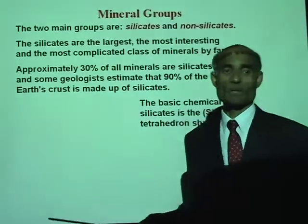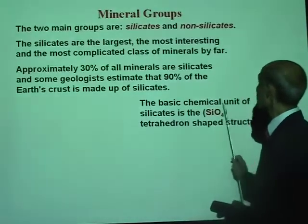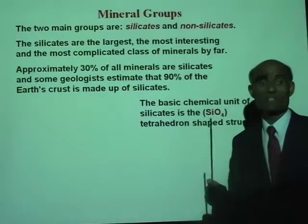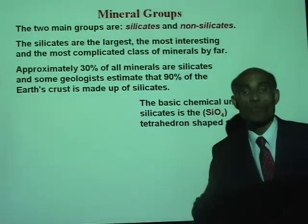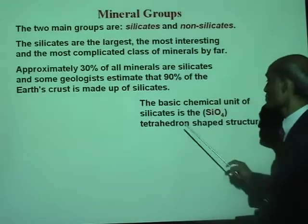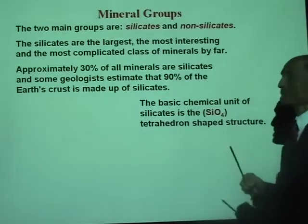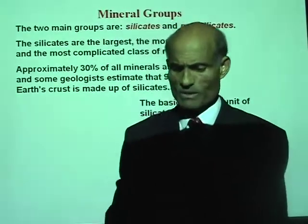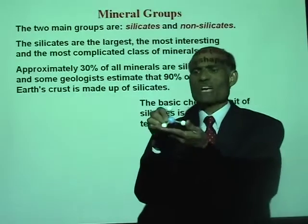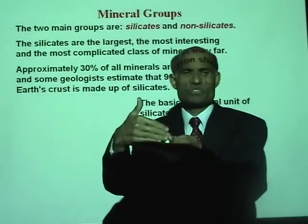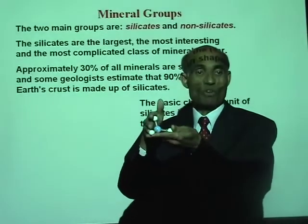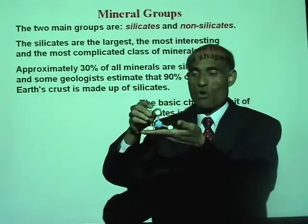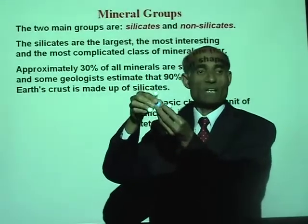The basic chemical unit of silicates is SiO₄ — one atom of silicon with four atoms of oxygen in a tetrahedron shape. What is a tetrahedron? Tetra means four sides — one, two, three, four — so this is a tetrahedron. You've got one plane, a second, a third, and a fourth. This is a basic tetrahedron shape.